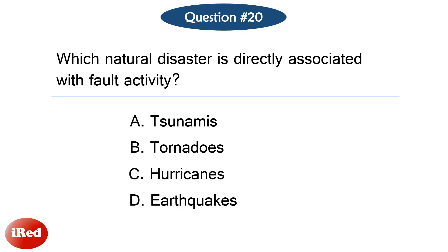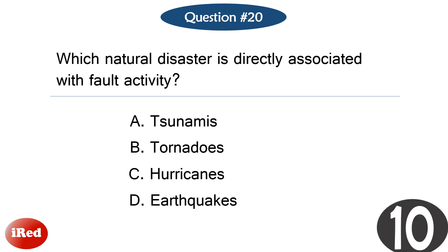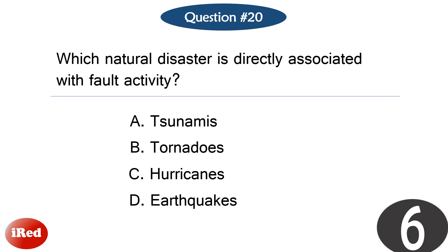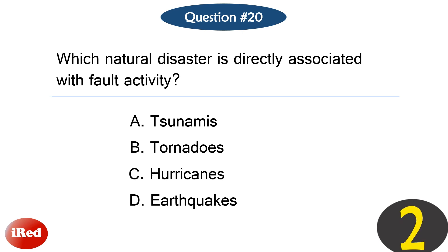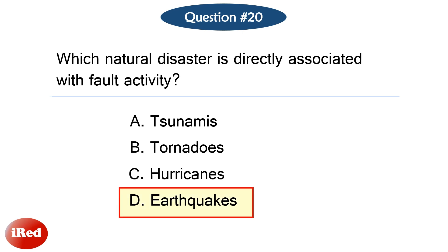Question number 20. Which natural disaster is directly associated with fault activity? The correct answer is letter D: earthquakes.